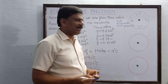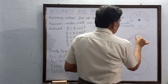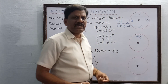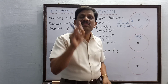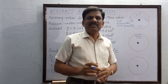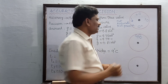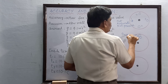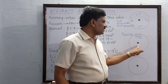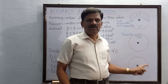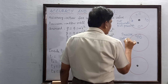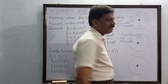Another case: a person fires four bullets and all four land very close to the same point. His firing is precise because all four bullets hit nearly the same position. But not even a single bullet is close to the center of the bull's eye, so the shots are not accurate. This is precise but not accurate.